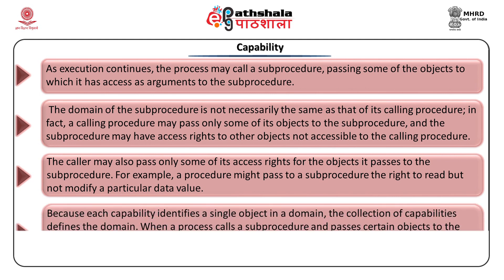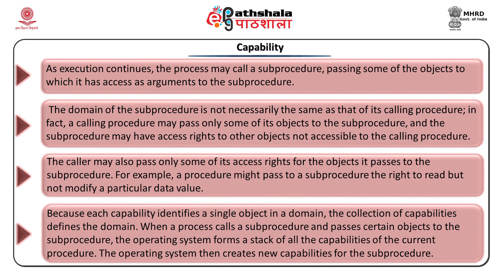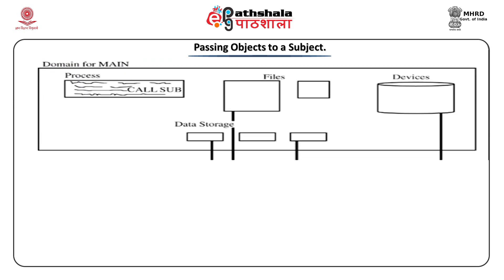A procedure might pass to a subprocedure the right to read but not to modify particular data. Each capability identifies a single object in the domain, and the collection of capabilities defines the domain. When a process calls a subprocedure and passes certain objects to it, the operating system forms the capabilities of the current procedure. A domain contains a collection of objects, each object has an individual capability, so if a procedure passes certain objects to a subprocedure, it has to pass the corresponding capabilities to the subprocedure. The diagram shows the passing of objects to a subprocedure.